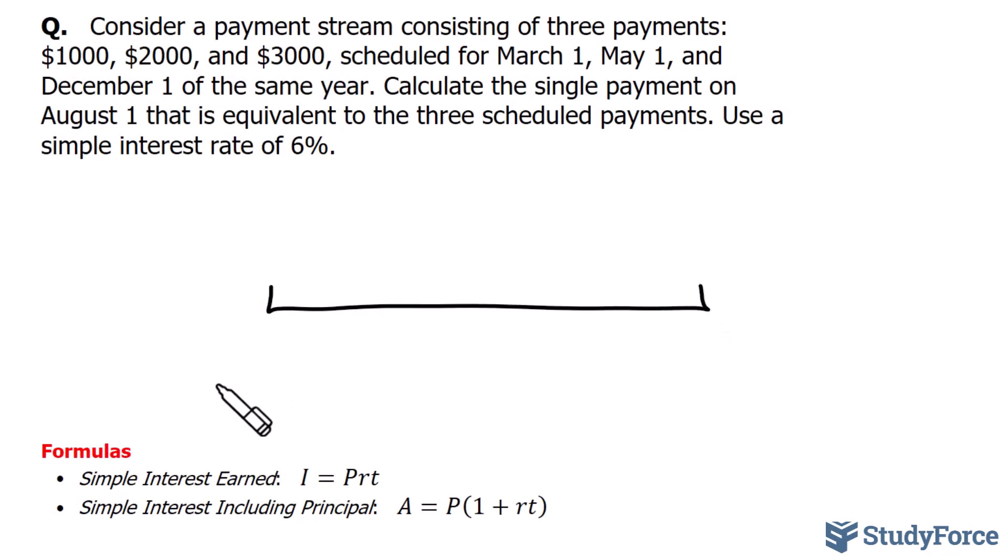We have today being March 1st, and $1,000 is owed on that date. On May 1st, $2,000 is owed. And by December 1st, $3,000 is owed.